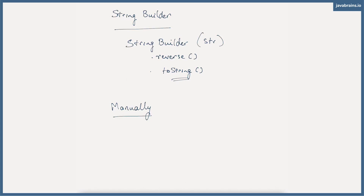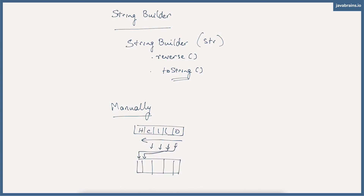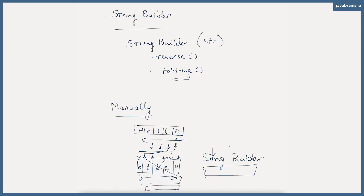If we were to do it manually, things would be a little bit different. I would need to loop through the string from the back to the front, get each character out, and put it into another string — going from back to front and inserting characters from front to back. The problem is that every time you insert something into a string, since strings are immutable, you result in a new string. So instead of inserting to a string, you insert into a StringBuilder, in reverse order. Once you're done with all your inserts, you get a string out of it, which is the final reversed string.